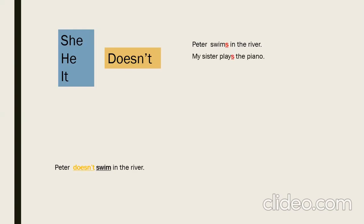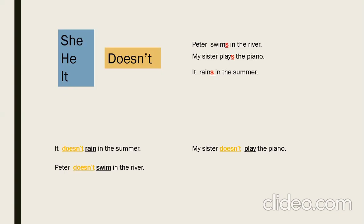In affirmative sentences with the third person, we say: My sister plays the piano — the verb takes an '-s' or '-es' or '-ies'. But in the negative, we use 'doesn't' and the verb goes back to its base form, because 'doesn't' carries the third person: My sister doesn't play the piano. It rains in the summer — negative: It doesn't rain in the summer. For he, she, or it, we use 'doesn't' in the negative form.